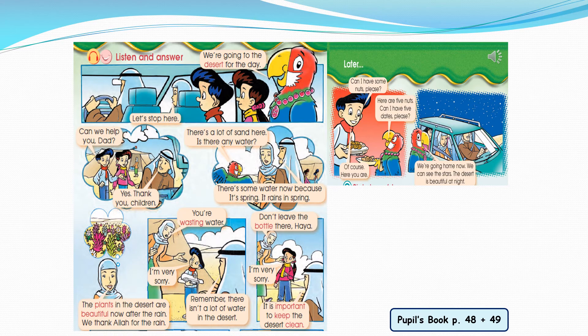After listening to pages 48 and 49, we know that they are going to the desert for the day. They saw beautiful plants in the desert because it's spring and it rains in spring. Also, we know that Polly likes nuts and dates.